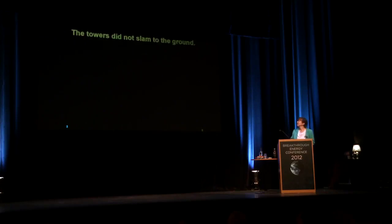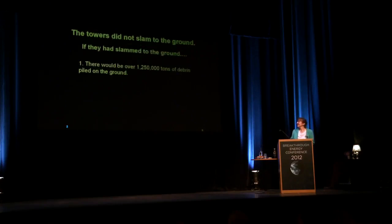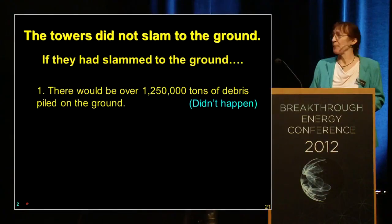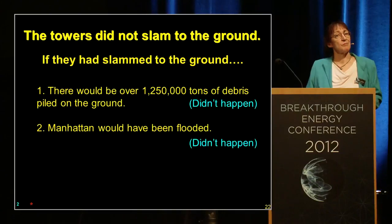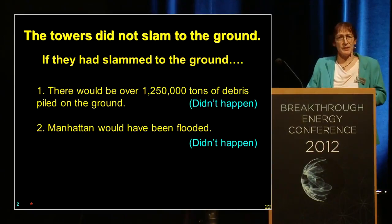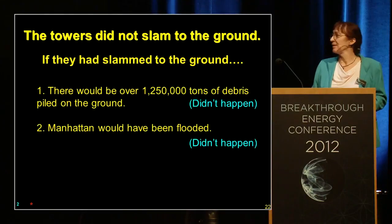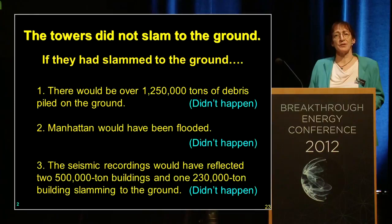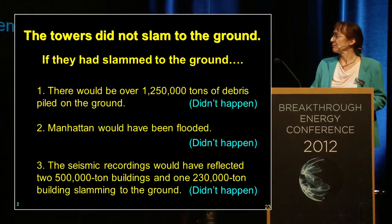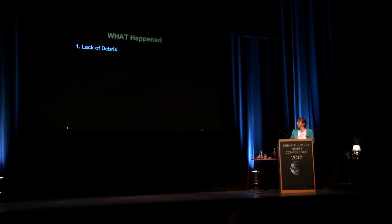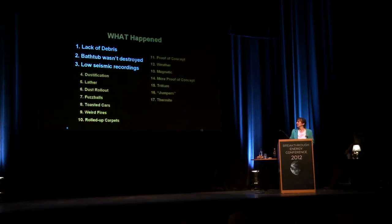The towers didn't slam to the ground. If they had, there would be over a million tons of debris stacked up on the ground — that didn't happen. Manhattan would have been flooded, because the towers were built in the Hudson River with a dike around them. If you slam a million tons of debris down onto the dike, you're going to break it — it didn't happen. And slamming a million tons of debris to the ground would make a thud; the seismic signals did not reflect that. Those are the three biggest issues: the lack of debris, the fact the bathtub wasn't damaged, and the low seismic recordings.